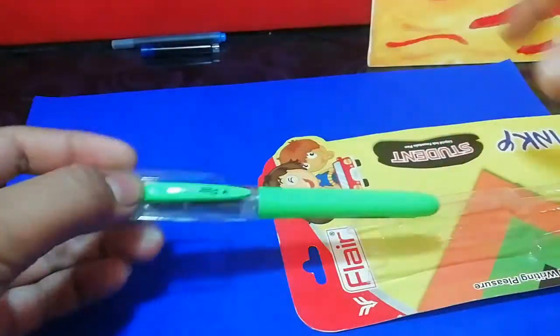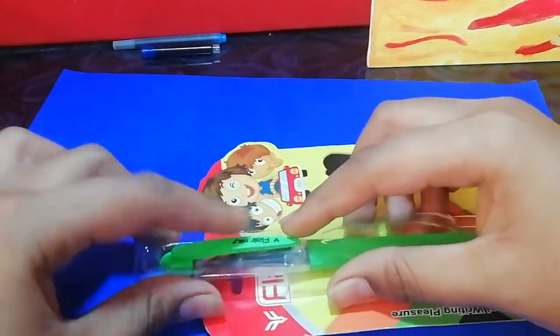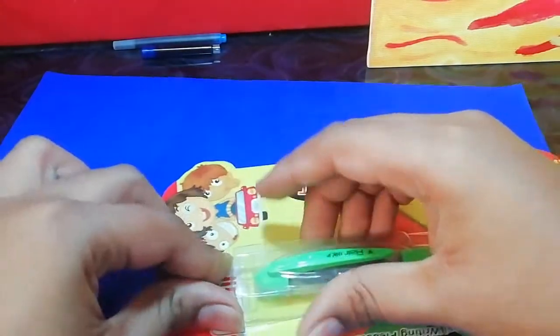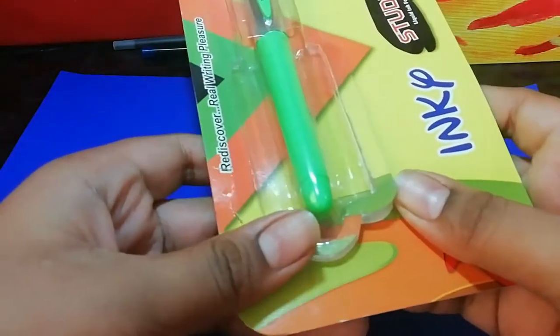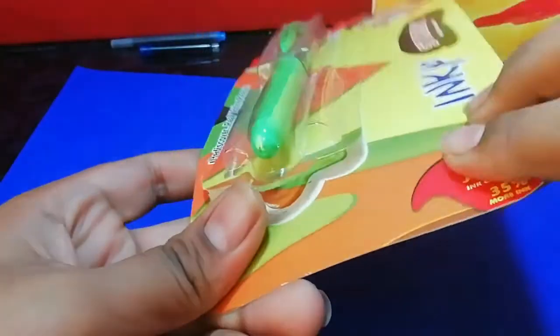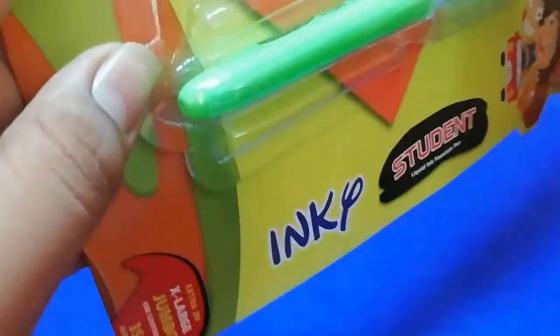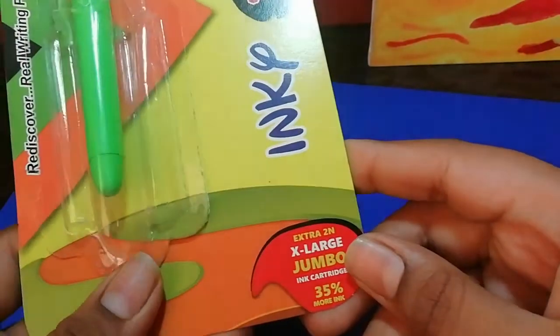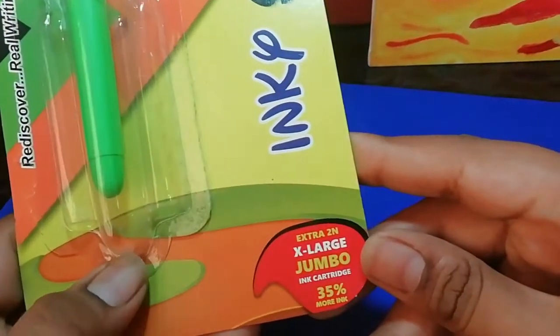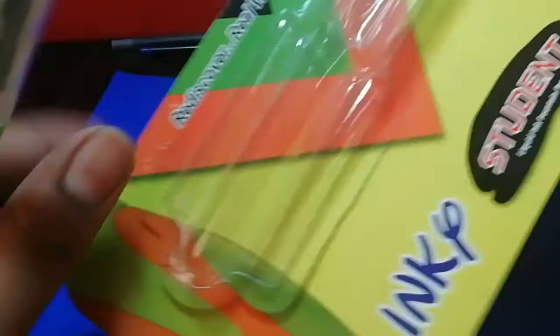It comes in this type of packaging. The pen comes placed like this and there are two cartridges over here. It's a normal plasticky packaging with cardboard. It comes with two extra long cartridges. It says here extra two number extra large jumbo cartridges, 35 percent more ink.